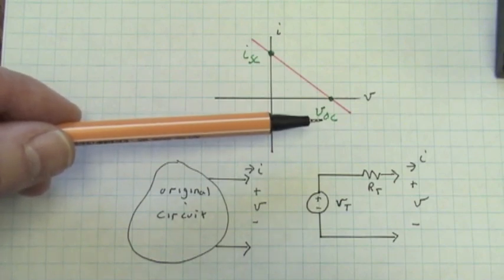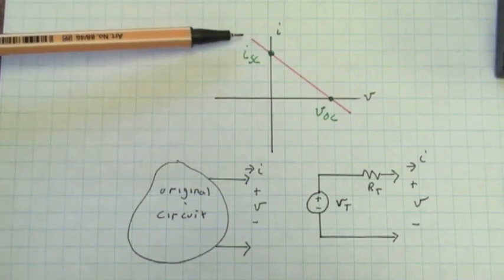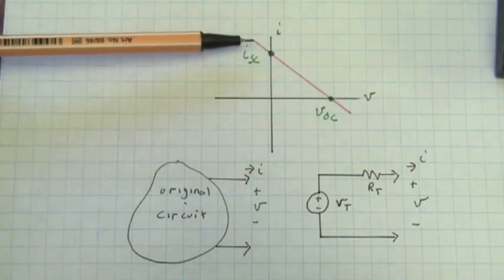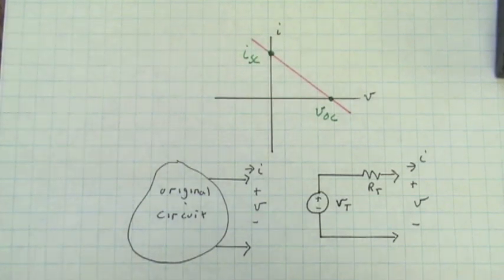They have the same value that we can say that no matter what is connected to the circuit, it has to fall somewhere along this line and the two circuits, that is the original circuit and the Thevenin equivalent will be equivalent as far as the rest of the circuit is concerned.